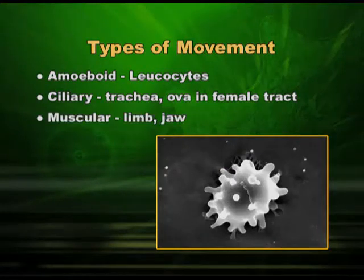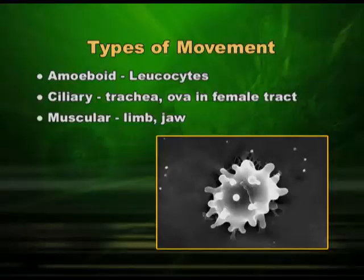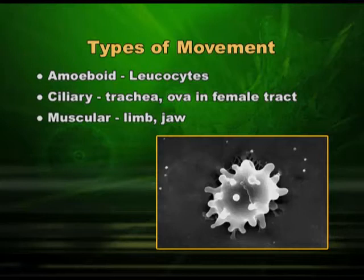Then another type is muscular movement, where muscles are involved. We have muscles in the body and we are going to discuss muscles in detail a little later. Wherever muscle is involved in the movement, we call it muscular movement — maybe the movement of our jaw, the movement of the eyelid, or movement of any other part of the body. So these are three major kinds of movements involved in locomotion.